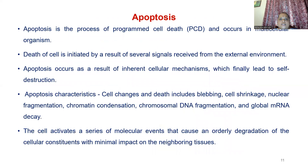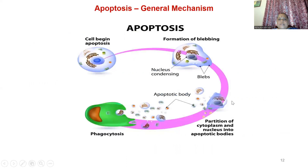Apoptosis is programmed cell death that occurs in multicellular organisms. The death of the cell is initiated by several signaling molecules from either the external environment or inherited cellular mechanisms, finally leading to self-destruction of the cell. Apoptosis characteristics include blebbing, cell shrinkage, nuclear fragmentation, chromatin condensation, chromosomal DNA fragmentation, and global mRNA decay. The cell activates a series of molecular events causing degradation of cellular constituents, and the nucleus condenses forming apoptotic bodies, which undergo phagocytosis.